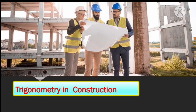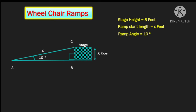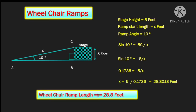The next application of trigonometry is in construction. Let's take an example where you have to construct a wheelchair ramp for a stage of height 5 feet, and the ramp has to be at an angle of 10 degrees for maximum safety. You need to find the length of the ramp — let that be x. You're again getting a right angle triangle, so you can use trigonometric concepts. Sine 10 degrees is the opposite side upon the hypotenuse, that is BC upon x. Substituting the values, x is 28.8 feet — the wheelchair ramp length is 28.8 feet. This is just one of the numerous ways trigonometry is useful in construction.